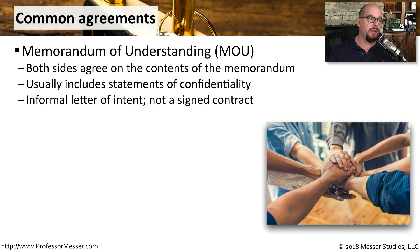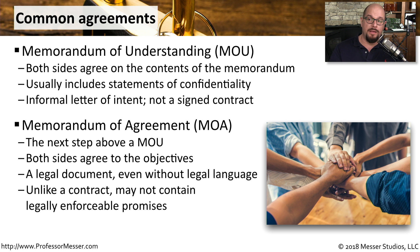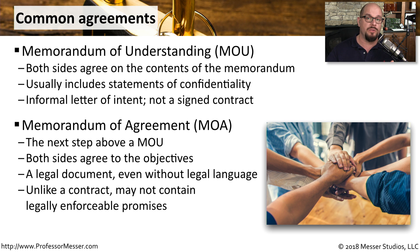A relatively less formal agreement is a Memorandum of Understanding, or an MOU. This is a document that details something that both sides can agree to, but it may not necessarily be a signed contract. The next step above an MOU is a Memorandum of Agreement. This is where both sides will agree to the specific information in the Memorandum of Agreement. This may not be a legal document with legal language, but it's something where both sides can agree to certain terms. For example, both sides may agree to promote and support the joint use of their facilities — that would be perfect language to add to a Memorandum of Agreement.